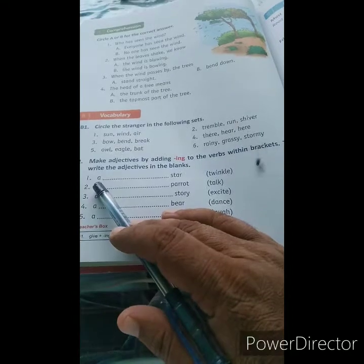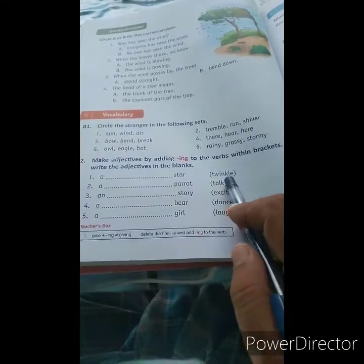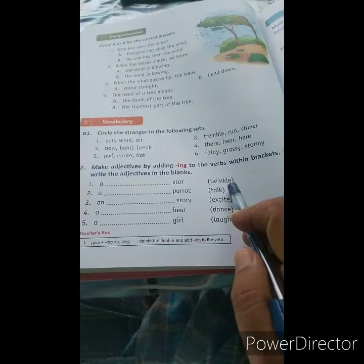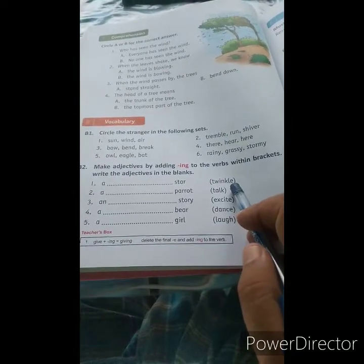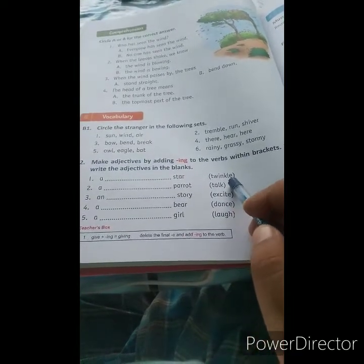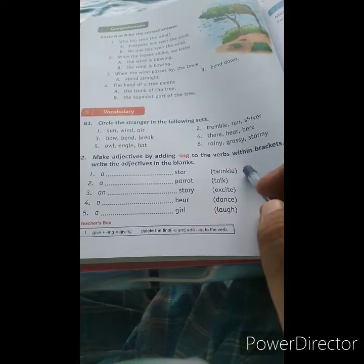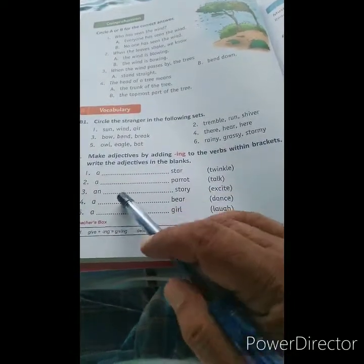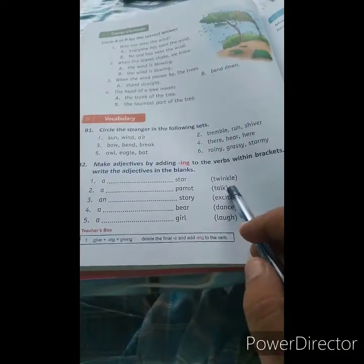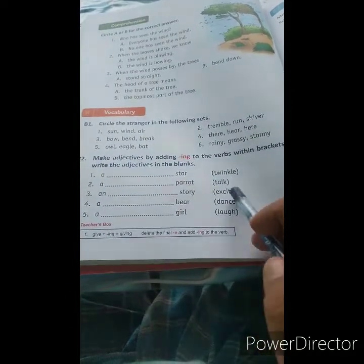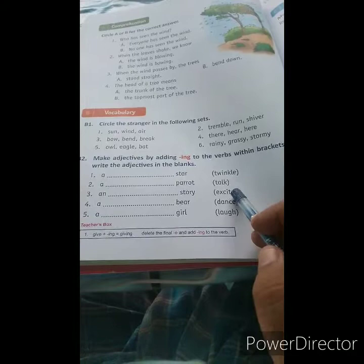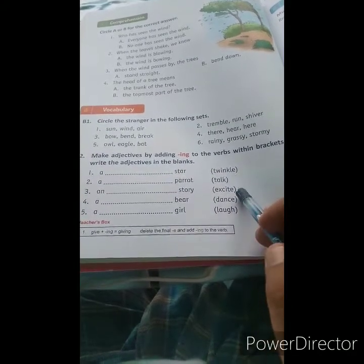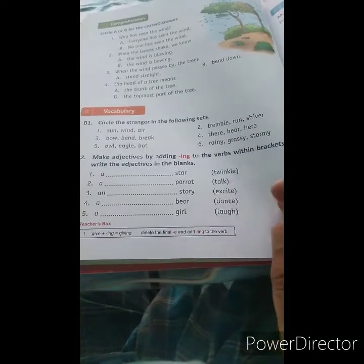First, a: the word is 'twinkle' - since it ends in E, we remove the E and add -ing to get 'twinkling' - a twinkling star. The rule is: if the word ends in E, remove E then add -ing; if there is no E, directly add -ing.